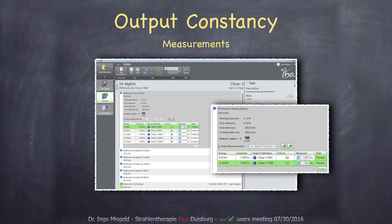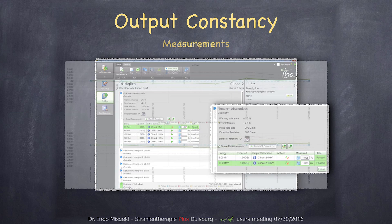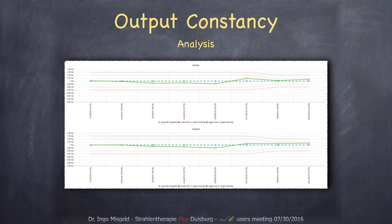After that you can analyze these measurements in the trend analysis. Over time you can see your outputs plotted, and you can see the limits you can set: the warning limit and the fail limit. You can also see that we changed these limits at some point to be a bit stricter. This is all kept in the database, so you can still see when you changed something, even after a long time.